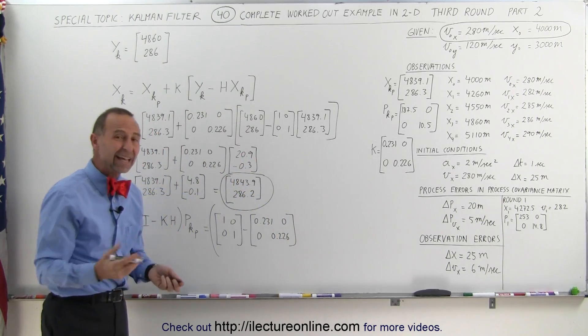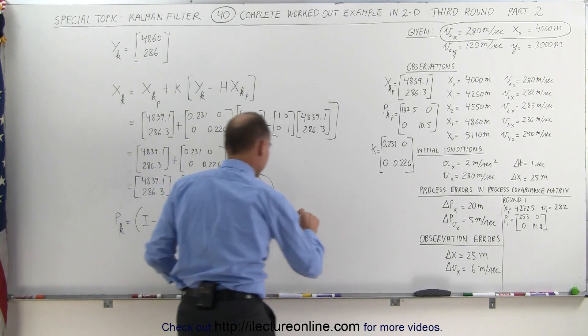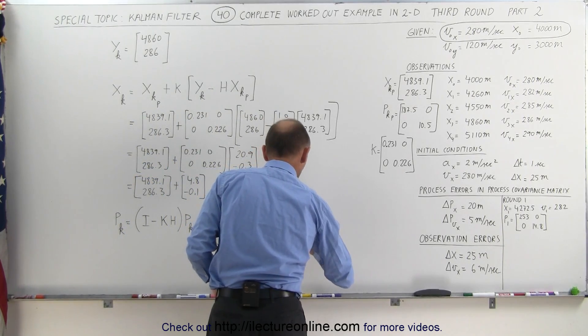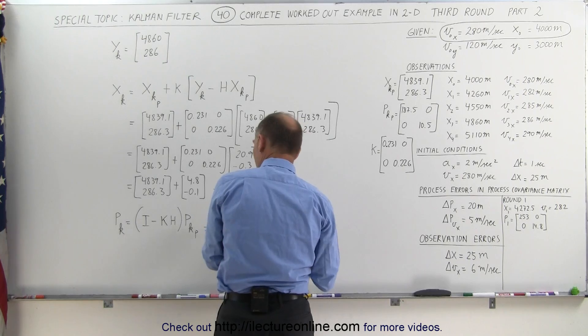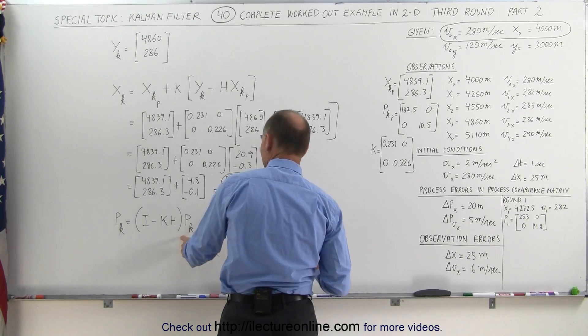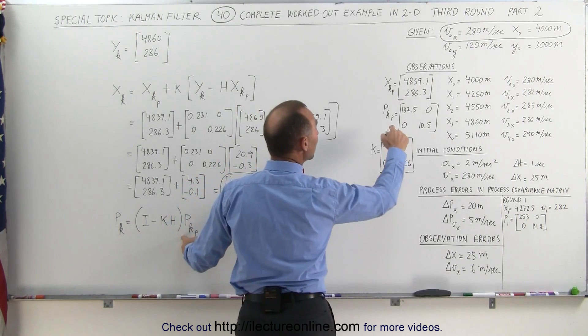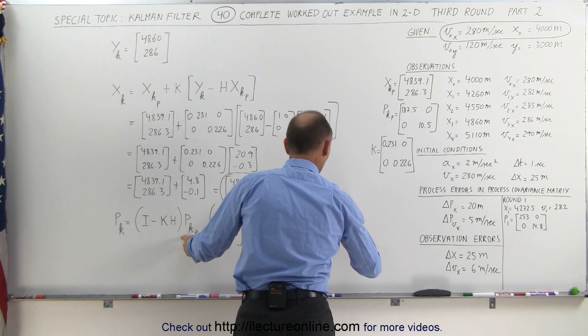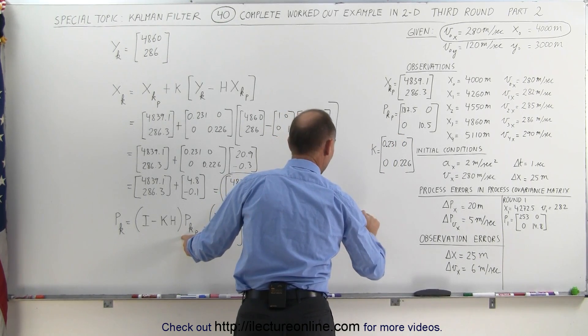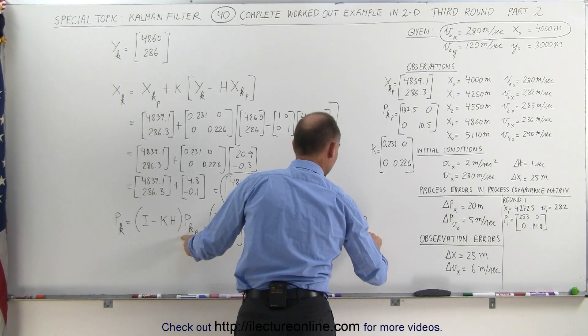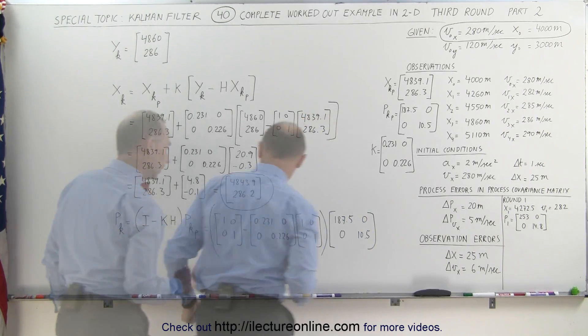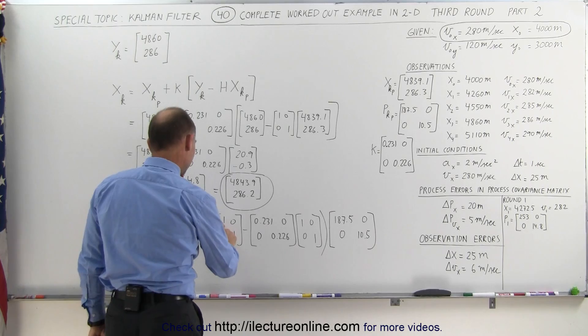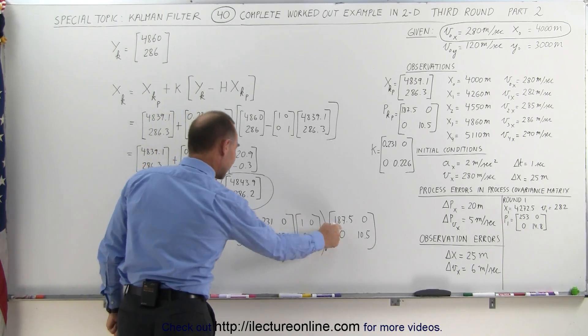Multiply times H. In this case, H is simply going to be the identity matrix as well, so nothing changes. This is just to change the format. And then we have to multiply it times the predicted process covariance matrix: 187.5, 0, 0, 10.5. Notice it will be this minus this multiplied times that.